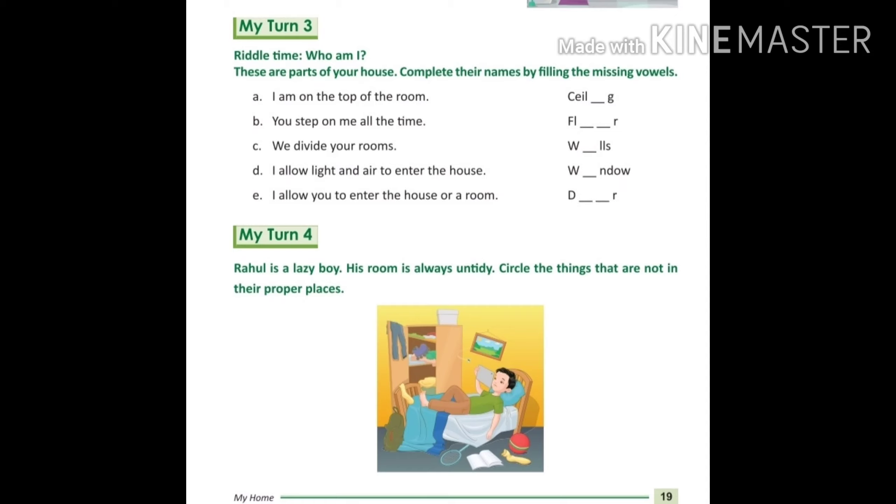Now I will read my turn four. Rahul is a lazy boy. His room is always untidy. Circle the things that are not in their proper places. You have to circle the things that are not in their proper position.